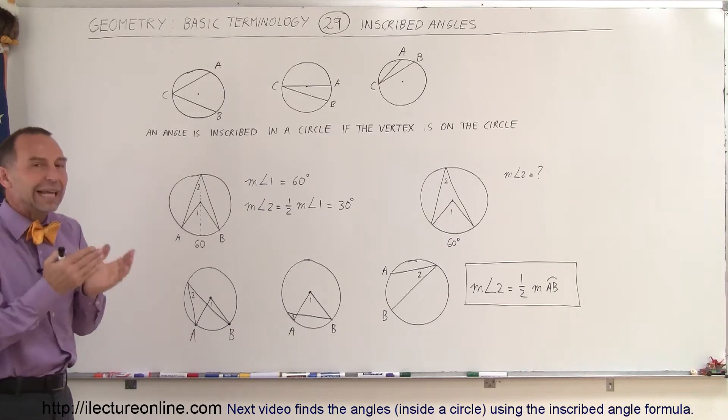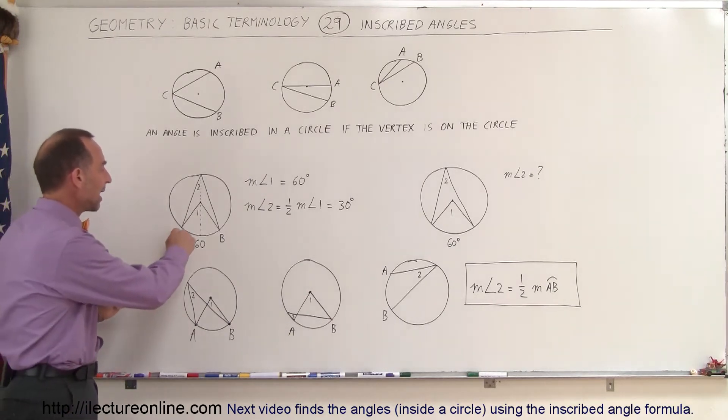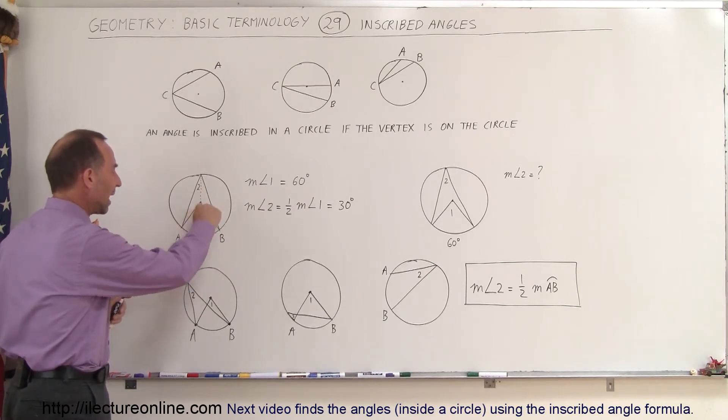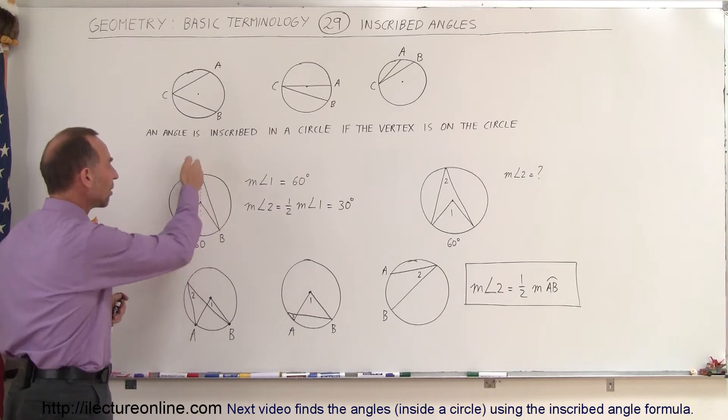Now, how is an inscribed angle related to the central angle? If we draw it very carefully here, here we have what we call a central angle. The vertex is at the center of the circle. Here is an inscribed angle.